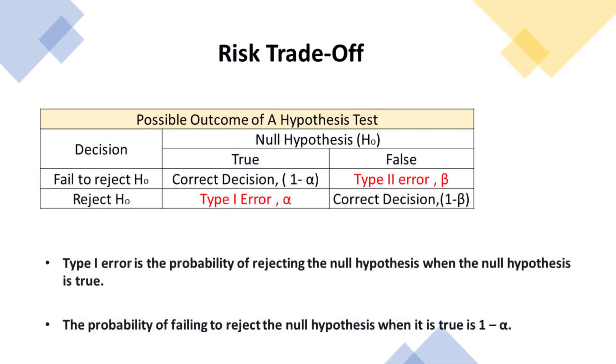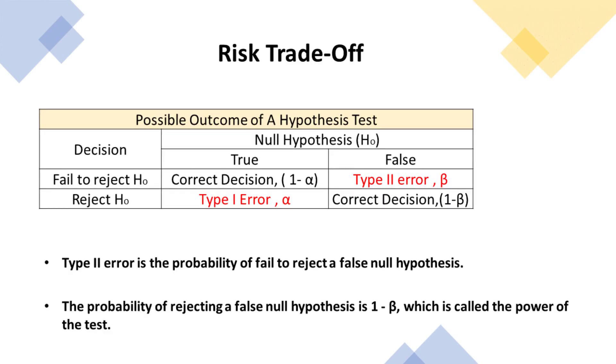Type I error is the probability of rejecting the null hypothesis when the null hypothesis is true. The probability of making a Type I error is known as alpha, also known as the level of significance. Alpha is the risk of finding a difference but in fact no difference. Type II error is the probability of failing to reject the null hypothesis when it is false. The probability of making a Type II error is known as beta. Beta is the risk of finding no difference but in fact, a difference exists.